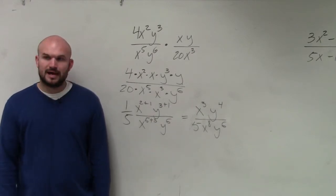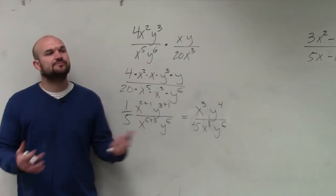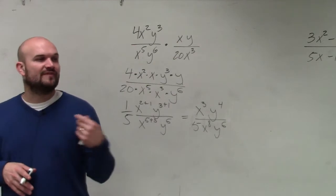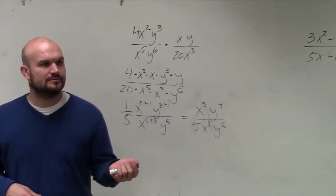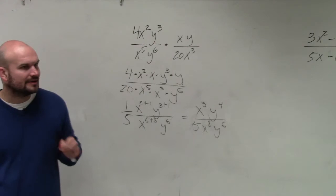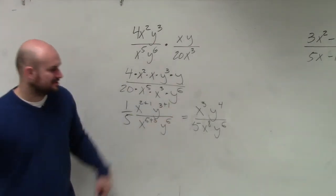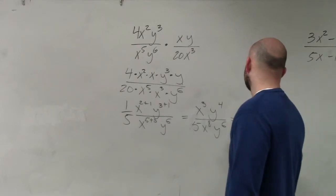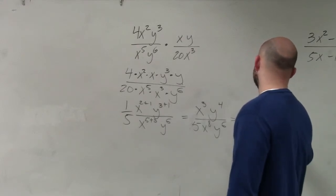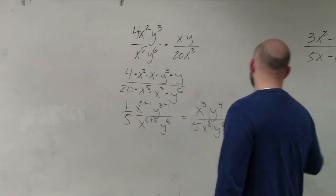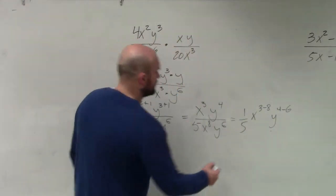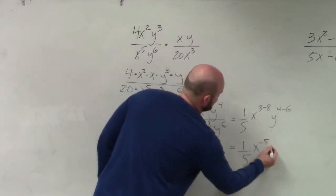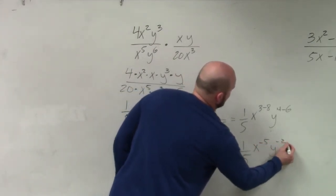Now I can apply the division property — or quotient property — of exponents. When you divide, you subtract the powers. So this becomes 1 fifth times x to the 3 minus 8, and y to the 4 minus 6. Therefore, that becomes 1 fifth times x to the negative fifth, y to the negative second.